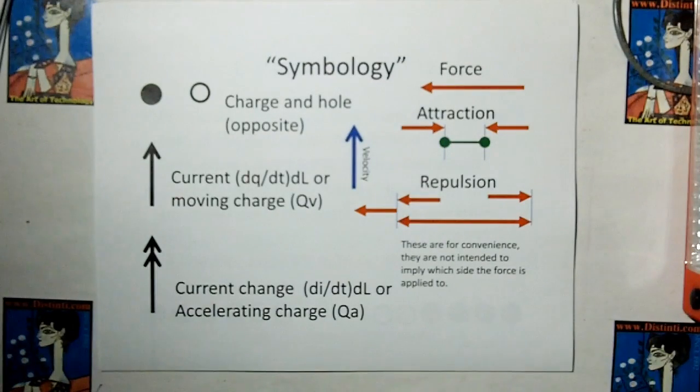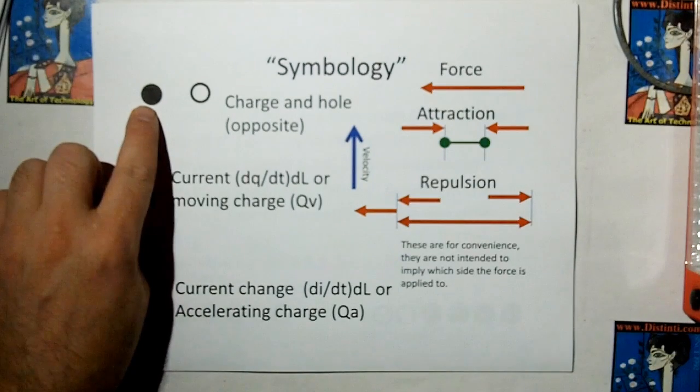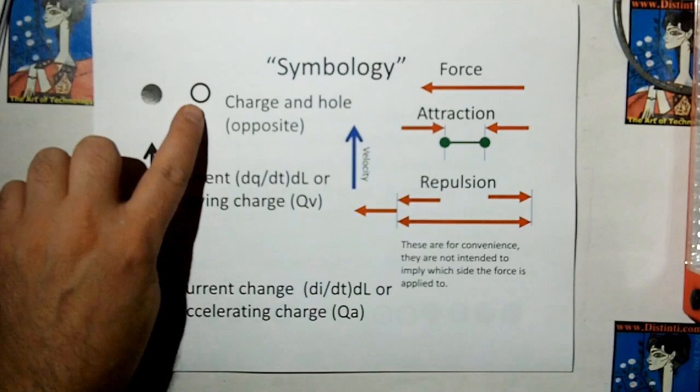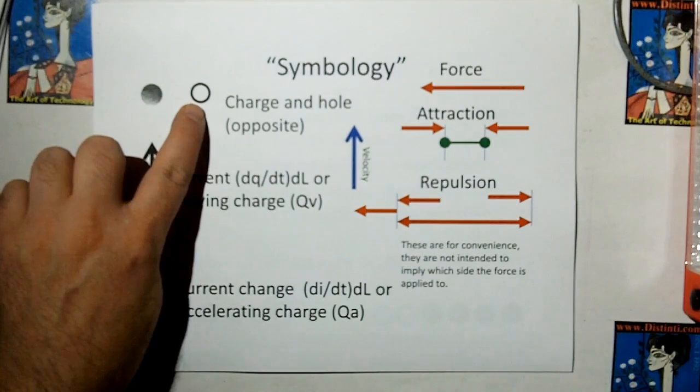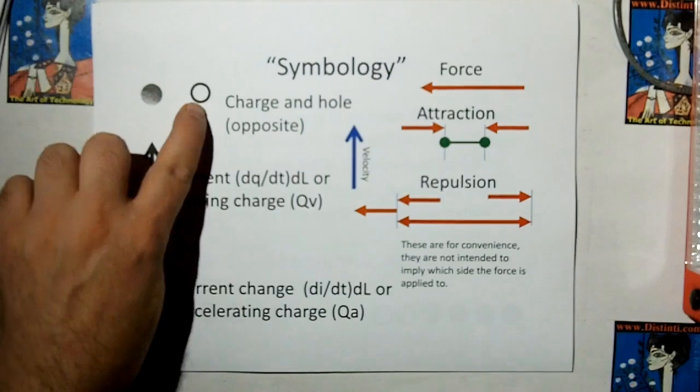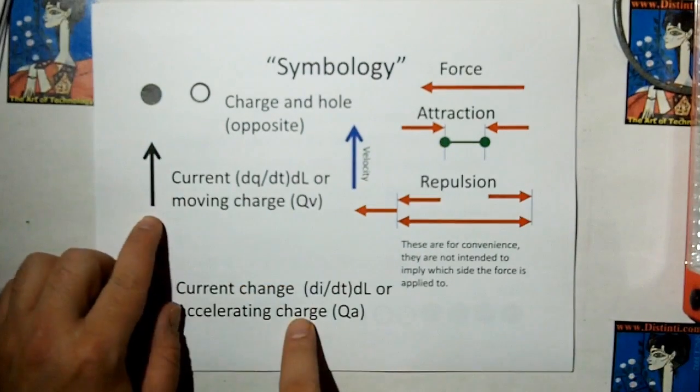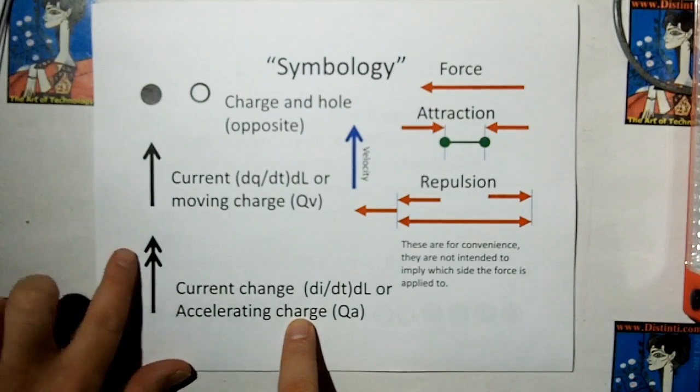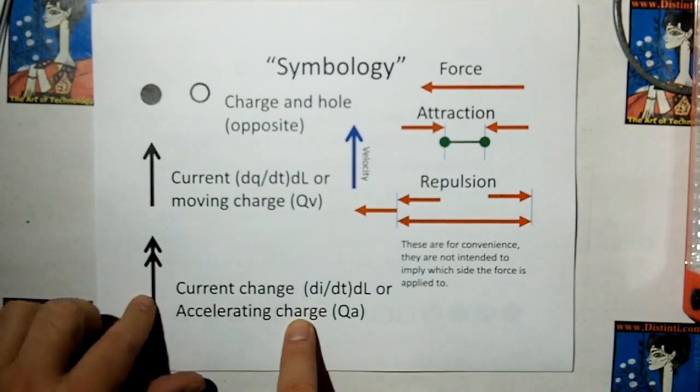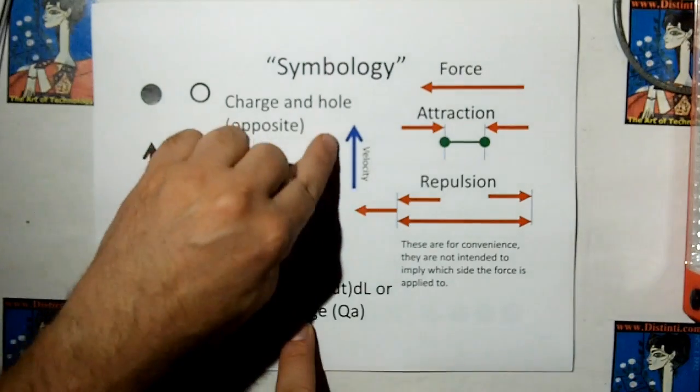Let's talk about the symbology we're going to use. A solid dot is a charge, an empty dot is called a hole. That's an electrical engineering term for a molecule that is missing its conduction electron. A current is defined as an open-headed dark arrow. A current change is a double open-headed dark arrow. The velocity of an object is just a blue open-headed arrow.